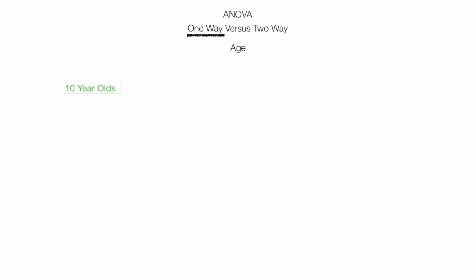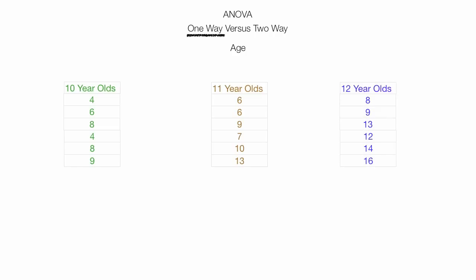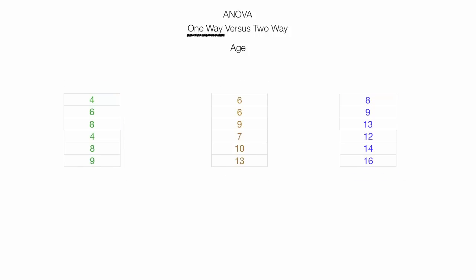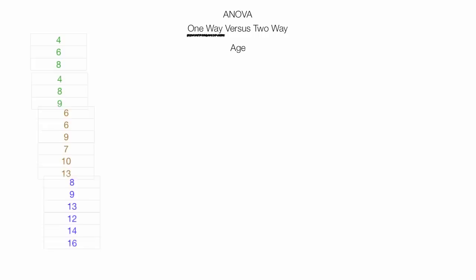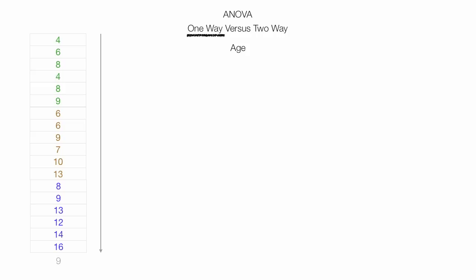If I was going to analyze this same data with a one-way ANOVA, and let's say I just looked at test score variation by age — so I have a 10-year-old group, an 11-year-old group, and a 12-year-old group — I would take the average of each group and compare them. I'd also look at the group as one big large group and take the total average of the entire group, which is equal to 9.